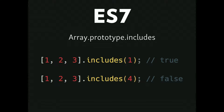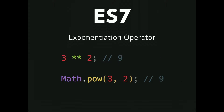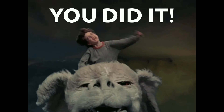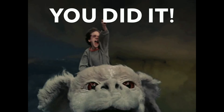Let's check out ES7 first. There are a couple of things. First is Array.prototype.includes — it checks an array: [1,2,3].includes(1) is true, [1,2,3].includes(4) is false. In ES7 we also have an exponent operator, replacing Math.pow: 3 ** 2 equals 9. And that's it — you've already learned all of ES7!